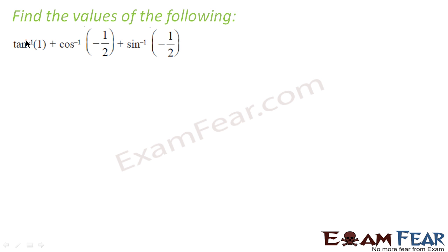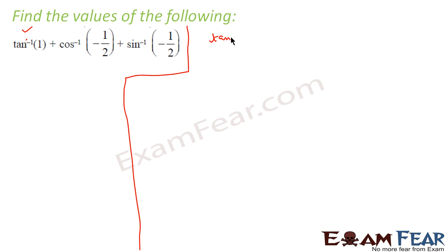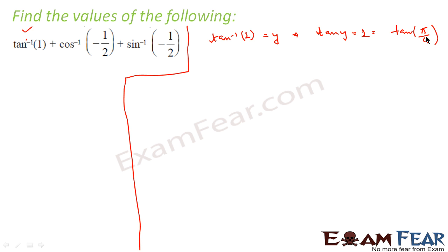Let me take the first part: tan inverse 1. I will assume tan inverse 1 is equal to y. What I get is tan y equals 1. I have to write 1 in the form of tan y so I can compare and get the value of y. So 1 is nothing but tan(π/4). y equals π/4, because π/4 lies in the principal interval and tan(π/4) equals 1. Comparing these two equations, I get y = π/4, so tan inverse 1 = π/4.